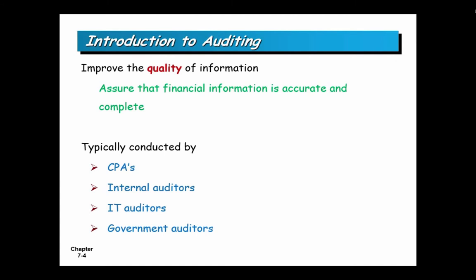The purpose of any audit is to improve the quality of information. External auditing — PwC or whoever — is trying to ensure that the information a company provides to the general public about their financial well-being is quality information that the public can rely upon. The purpose of an audit is to ensure the quality of information is correct, accurate, and complete. We think of audits as CPAs and external auditors, but it could be internal auditors. In our world, there are IT auditors, whether internal or external. The government will also come in and audit from time to time if they think there's some impropriety.